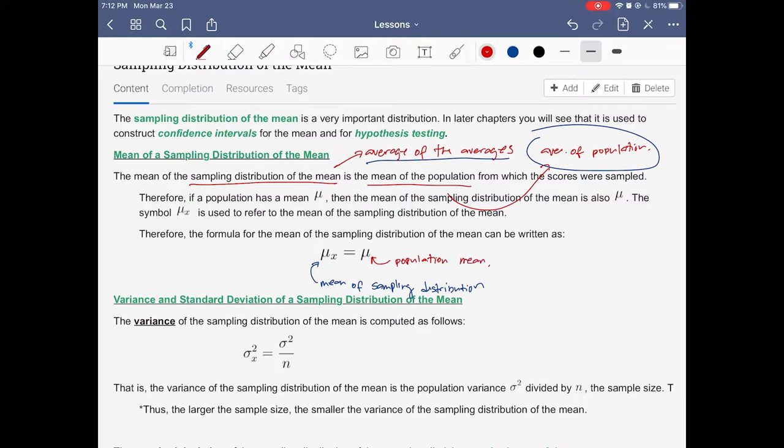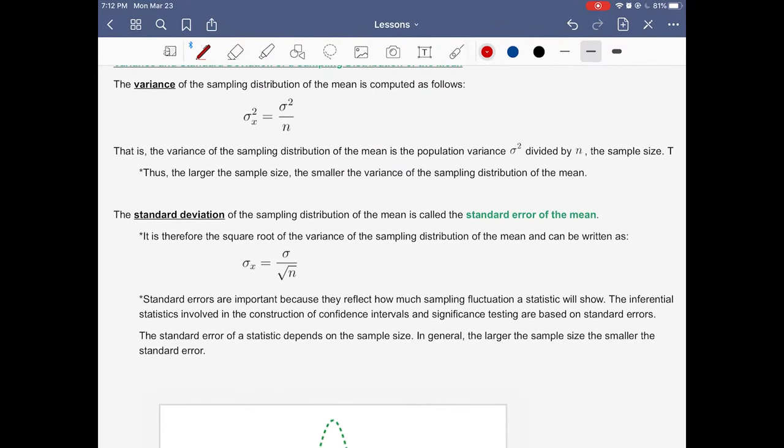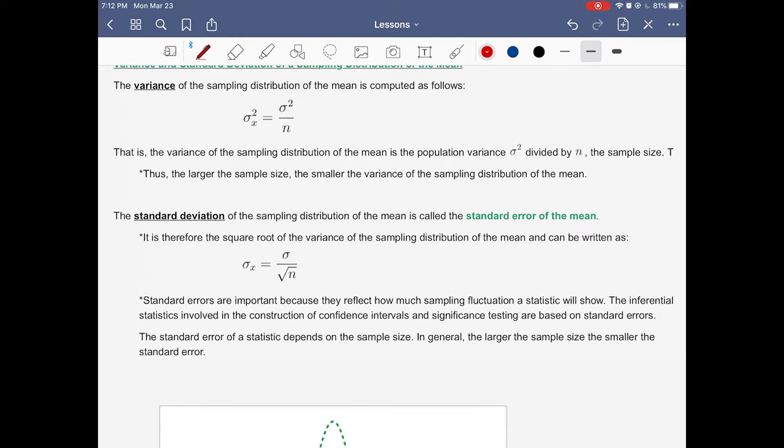Of course, since there is a mean, we could also have the variance and the standard deviation. Just like the population mean has population variance and population standard deviation. In this case, notice that the variance of the sampling distribution is computed as follows.